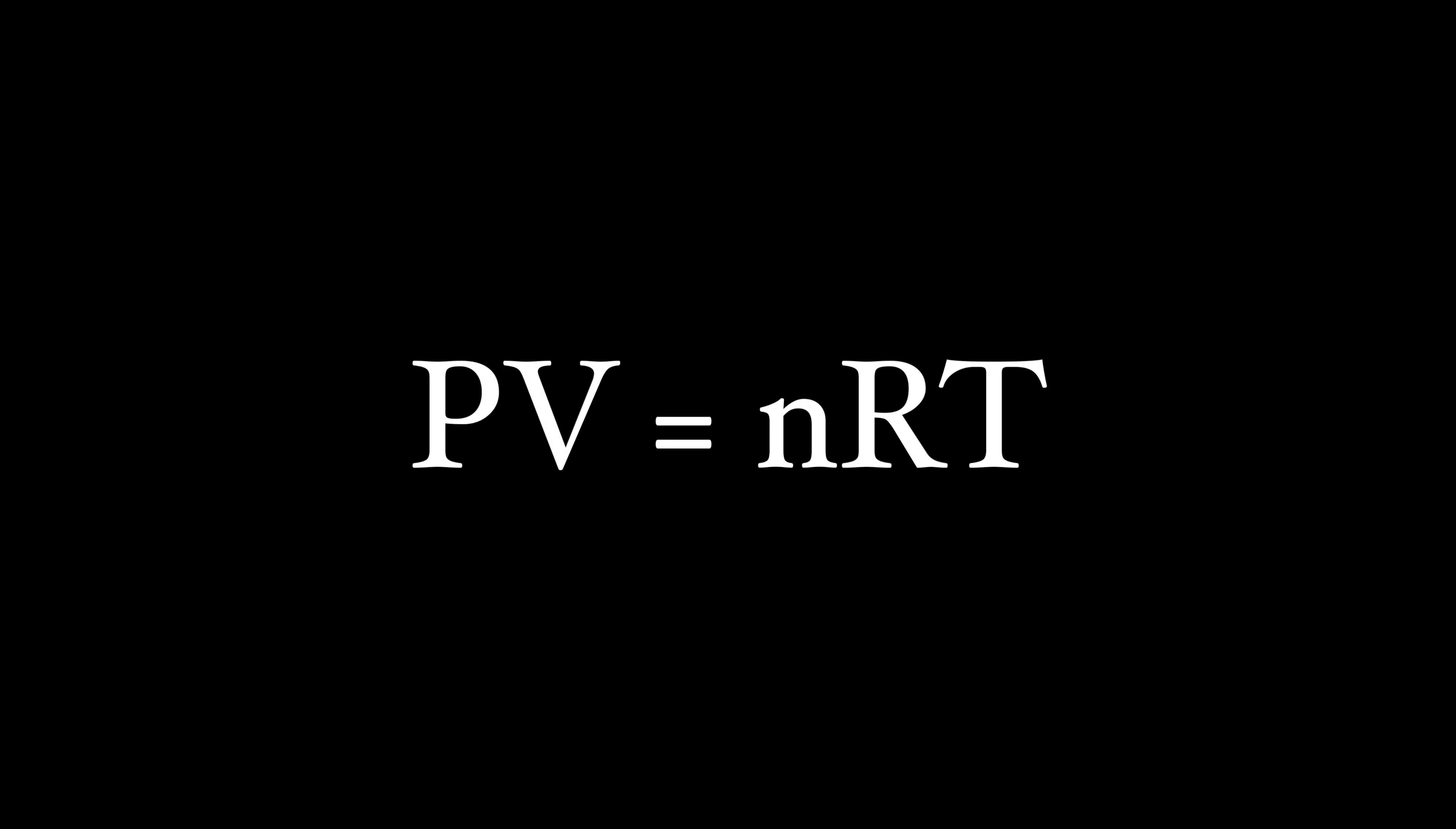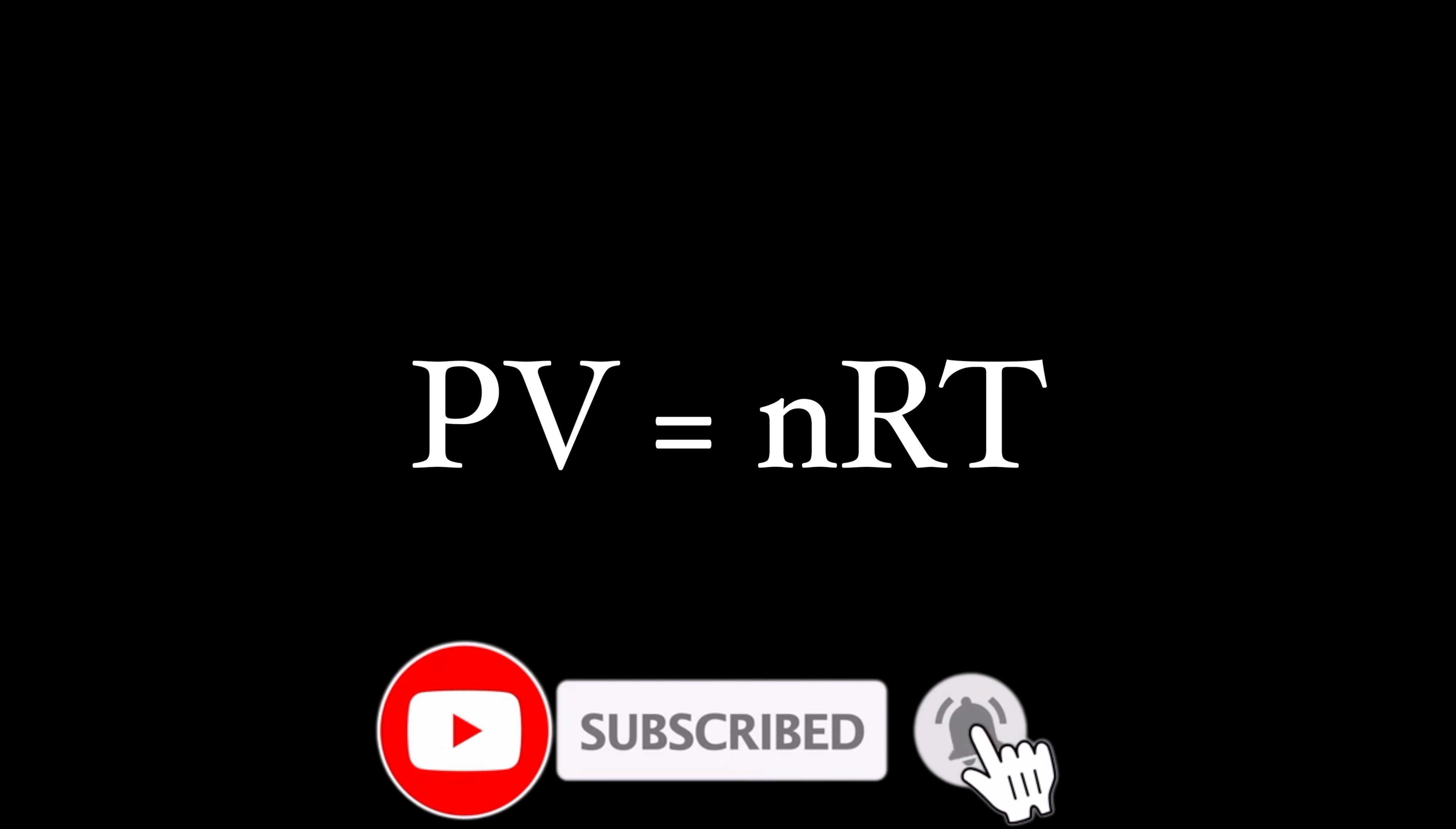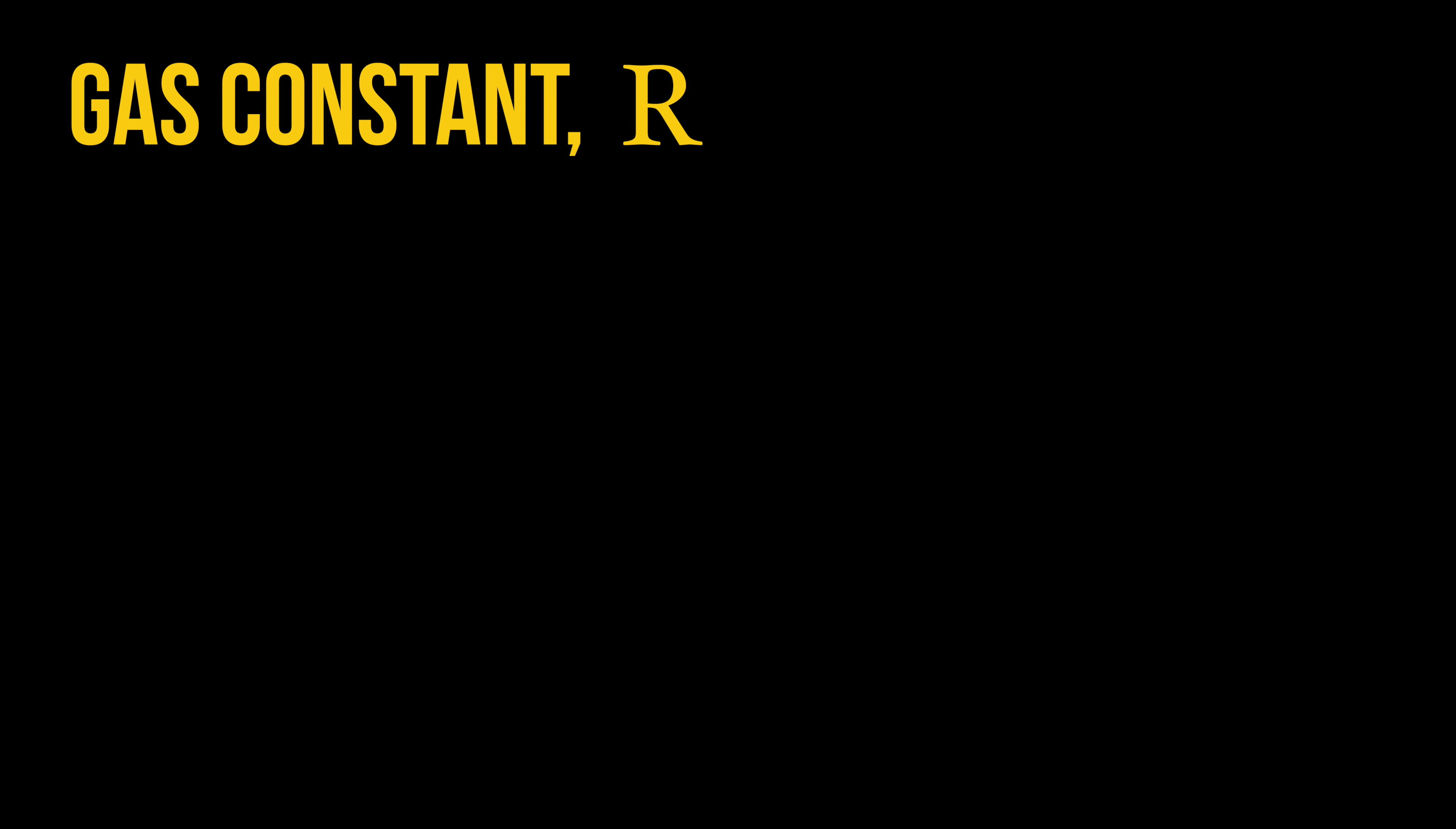So, we could remember all the different gas laws, or we could combine them all and turn them into one equation, PV equal to nRT. The ideal gas law is the most useful expression of the gas laws because it ties the amount of a gas to its pressure, volume, and temperature. The factor r in the ideal gas law equation is known as the gas constant.